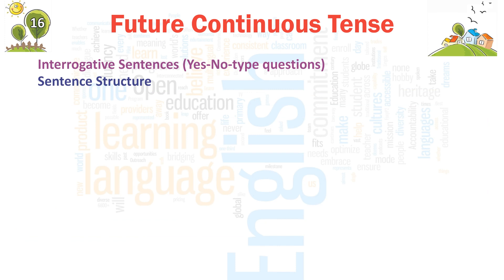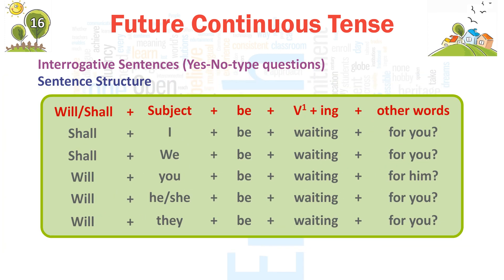Interrogative Sentences — Yes/No type questions. Sentence Structure: Will/Shall + subject + be + verb(-ing) + other words. Shall + I + be + waiting + for you? → 'Shall I be waiting for you?' Shall + we + be + waiting + for you? → 'Shall we be waiting for you?'